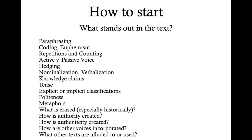Explicit or implicit classifications can be important — how is the speaker or writer categorizing things, defining what belongs in a particular category? Politeness is also an important factor — the grammar and terms of address people use can indicate something there. Metaphors could be very important. Also thinking about what is erased — particularly if there are social groups or particular histories erased in the language.